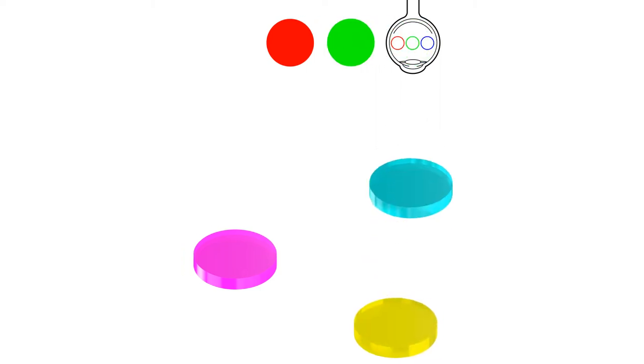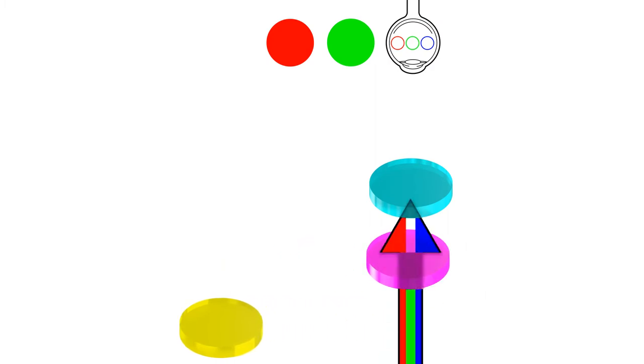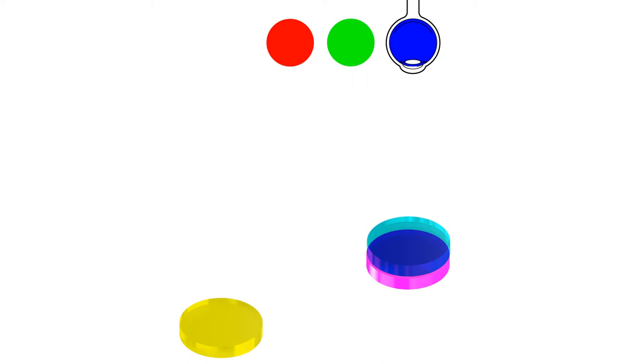Finally, when light passes through magenta and cyan, only blue light gets through, so the overlap between magenta and cyan appears blue.